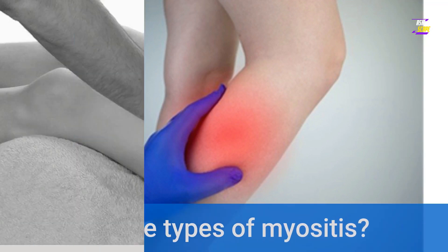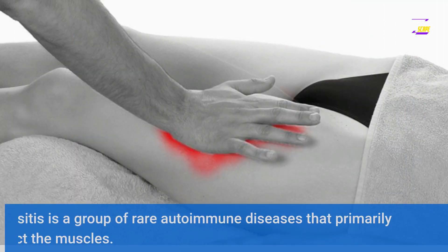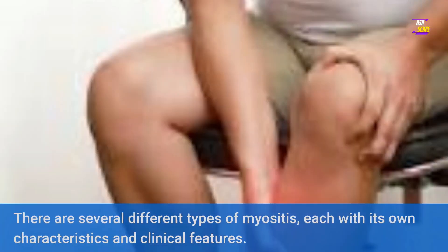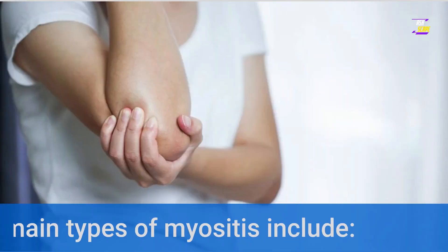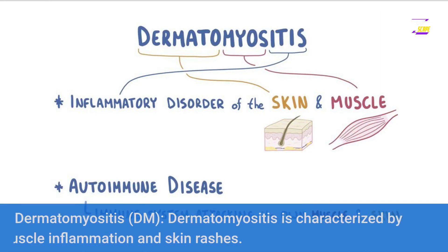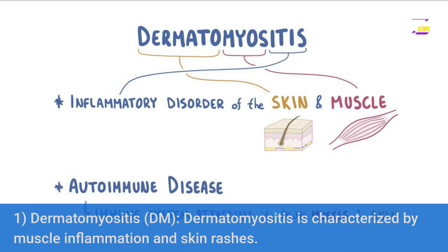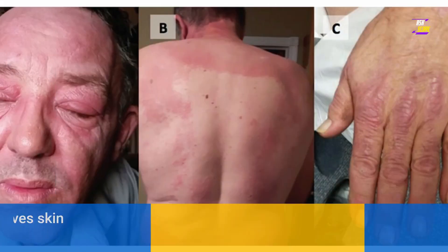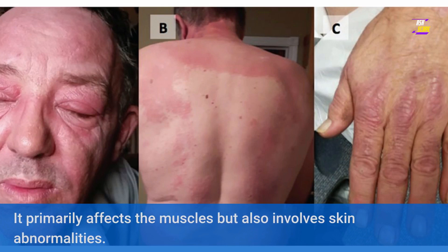Myositis is a group of rare autoimmune diseases that primarily affect the muscles. There are several different types, each with its own characteristics and clinical features. The main types include: 1. Dermatomyositis (DM) — dermatomyositis is characterized by muscle inflammation and skin rashes. It primarily affects the muscles but also involves skin abnormalities.